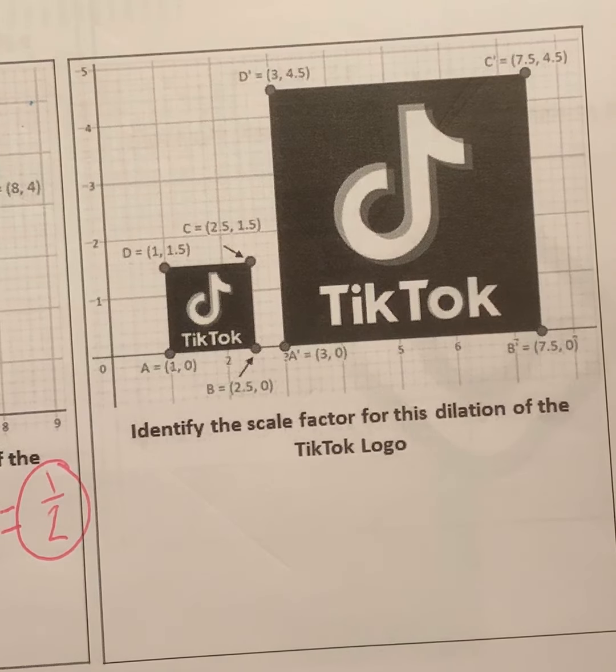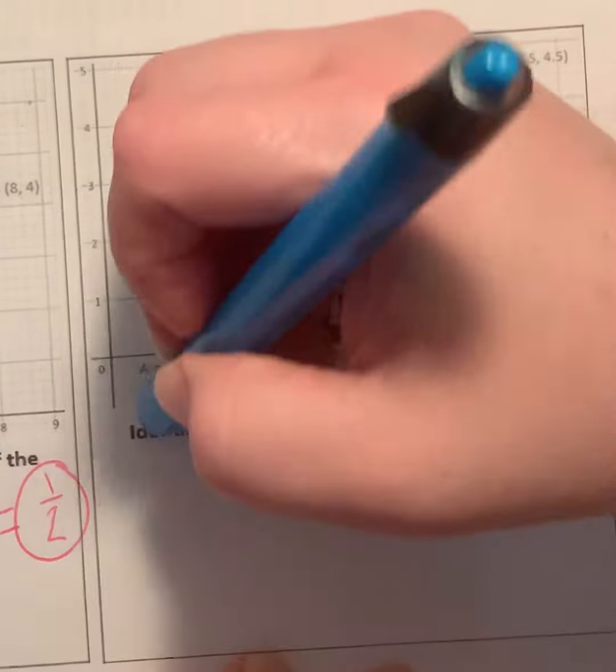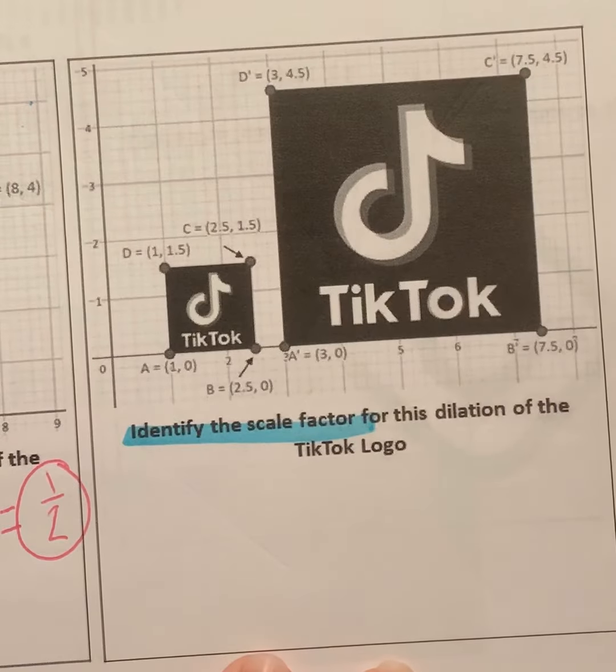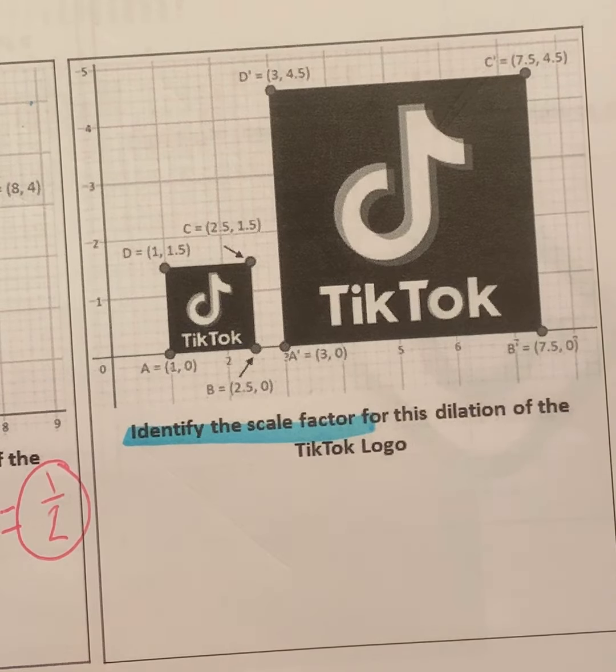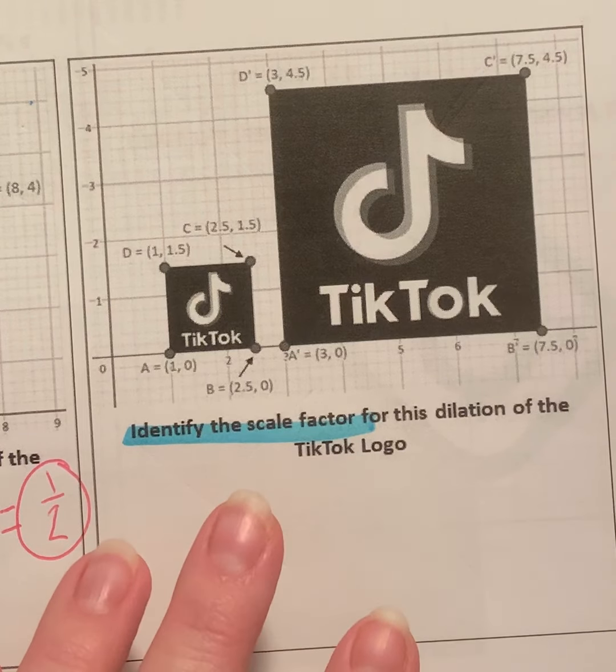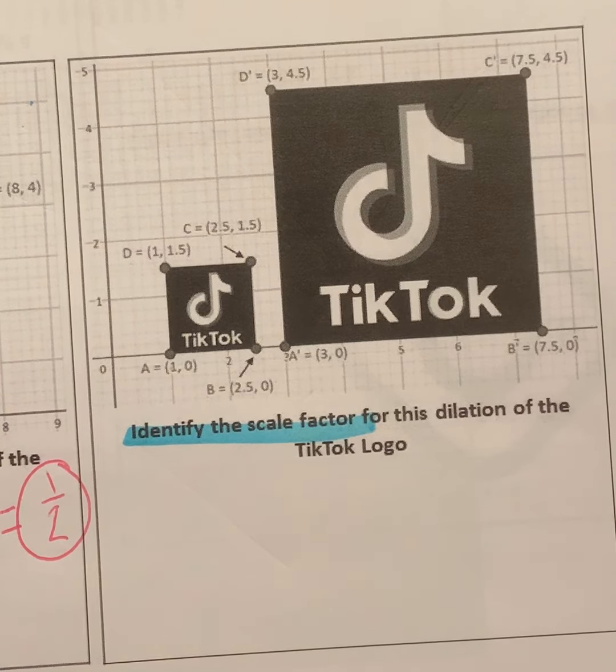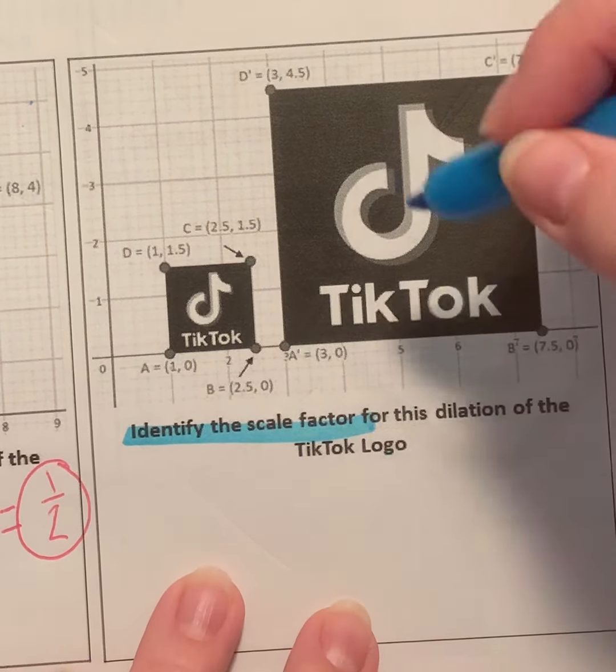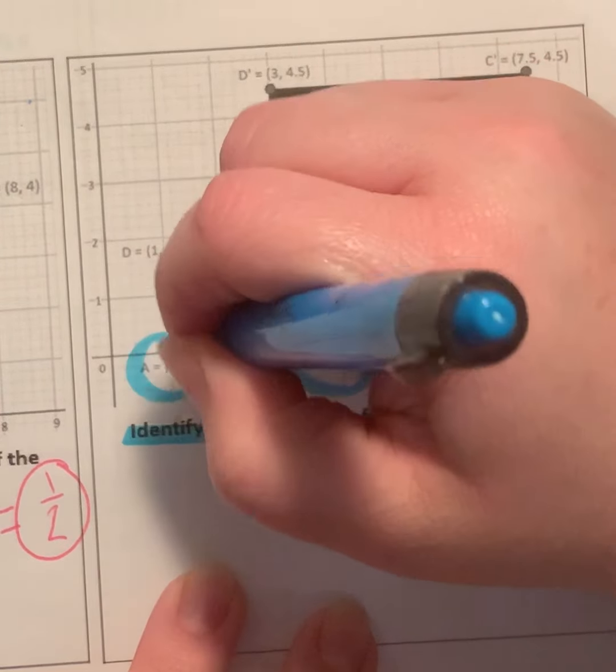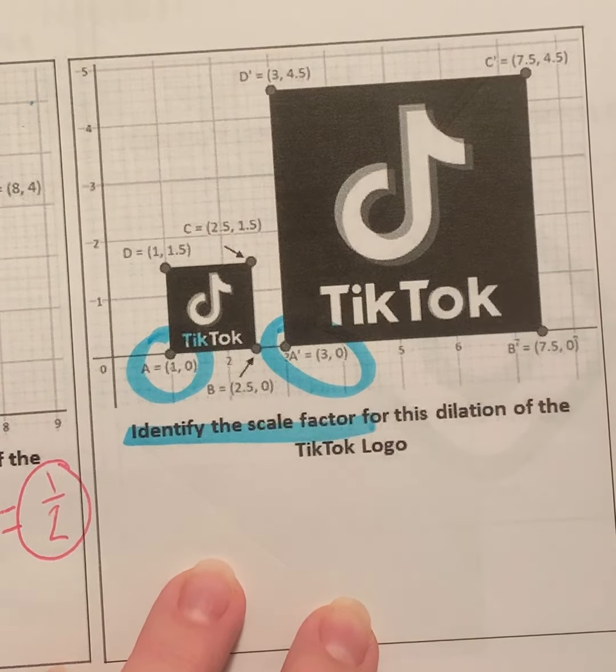So now for the TikTok logo. Again, we're just identifying the scale factor. So I'm just going to pick any point. It doesn't matter which point you pick. In the last one, I just randomly picked C. It doesn't matter. I'm going to pick an easy one for us. I'm going to go ahead and pick A. So here's A.